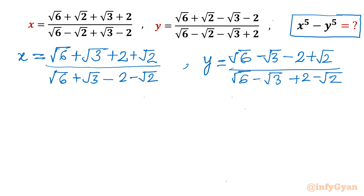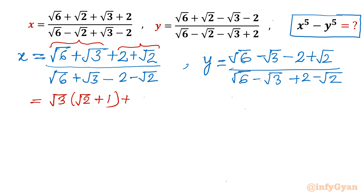From the first two terms of the numerator we can take √3 common, and from the last two terms of the numerator we take √2 common. Taking √3 common first gives (√2 + 1), and taking √2 common also gives (√2 + 1).